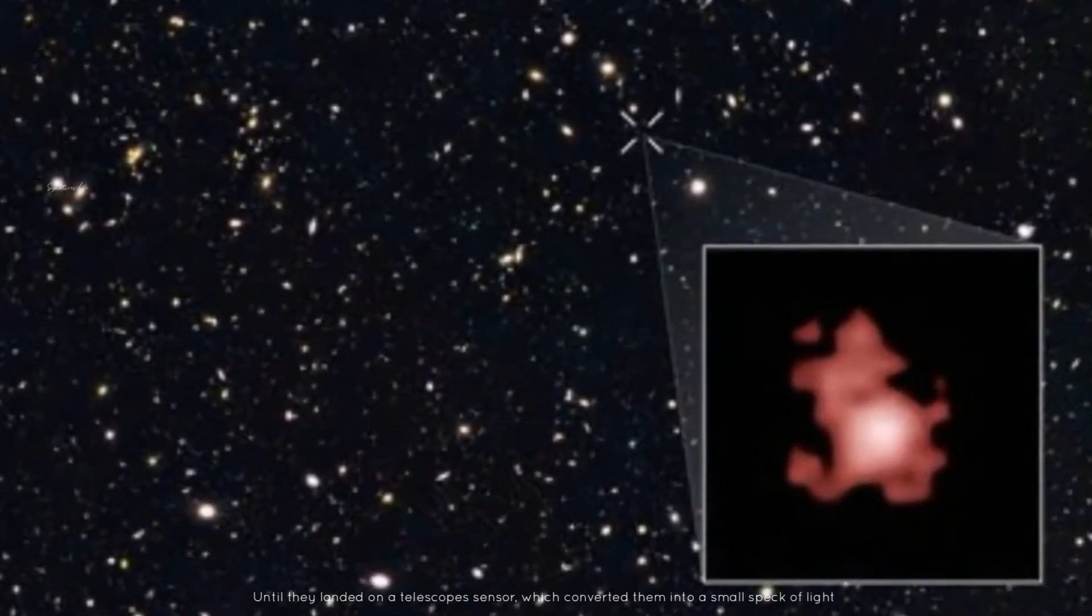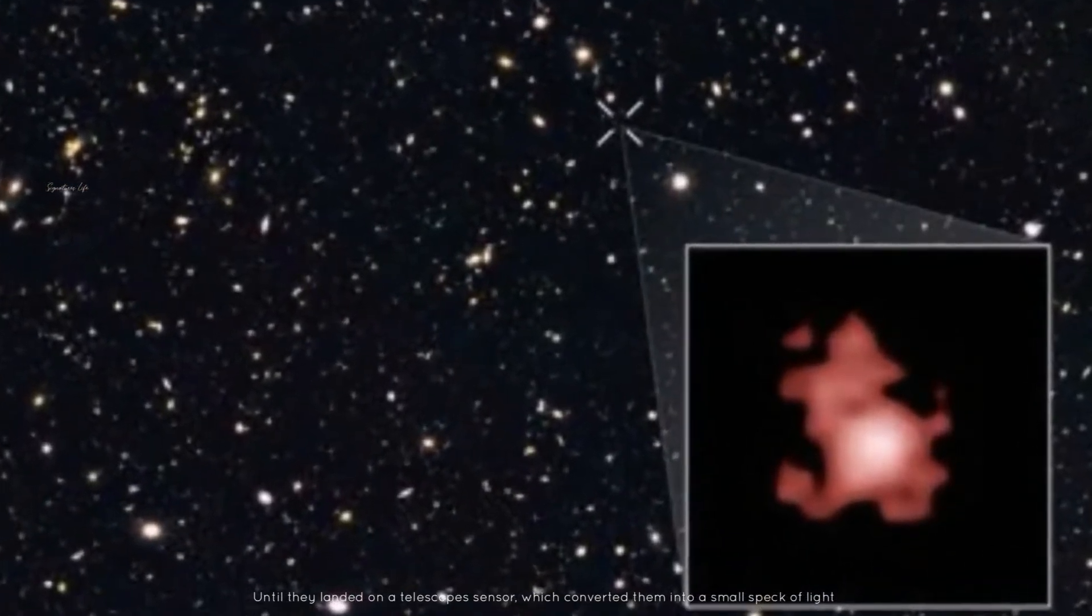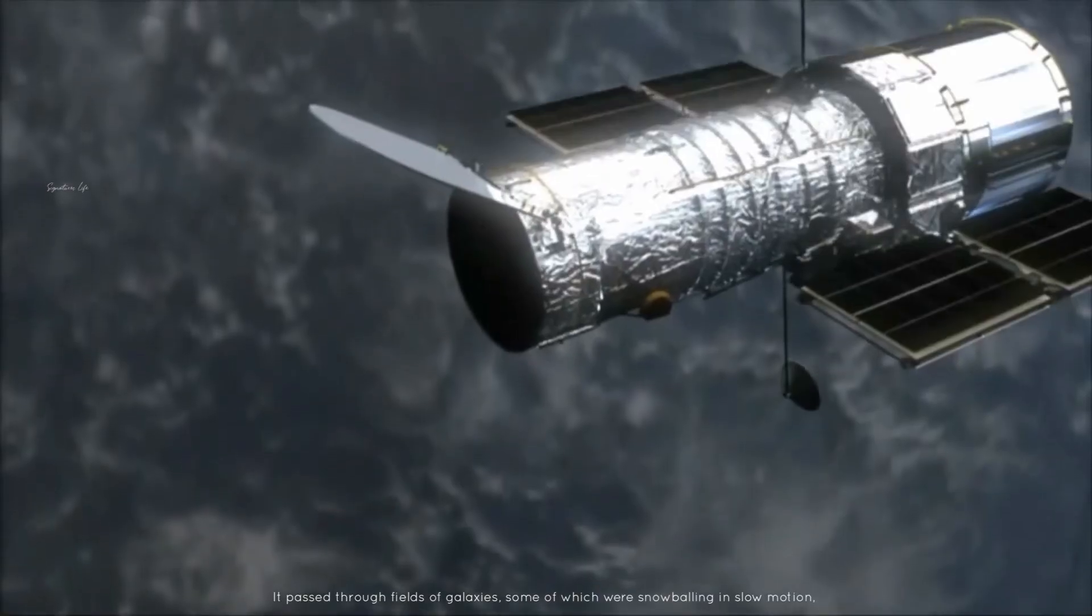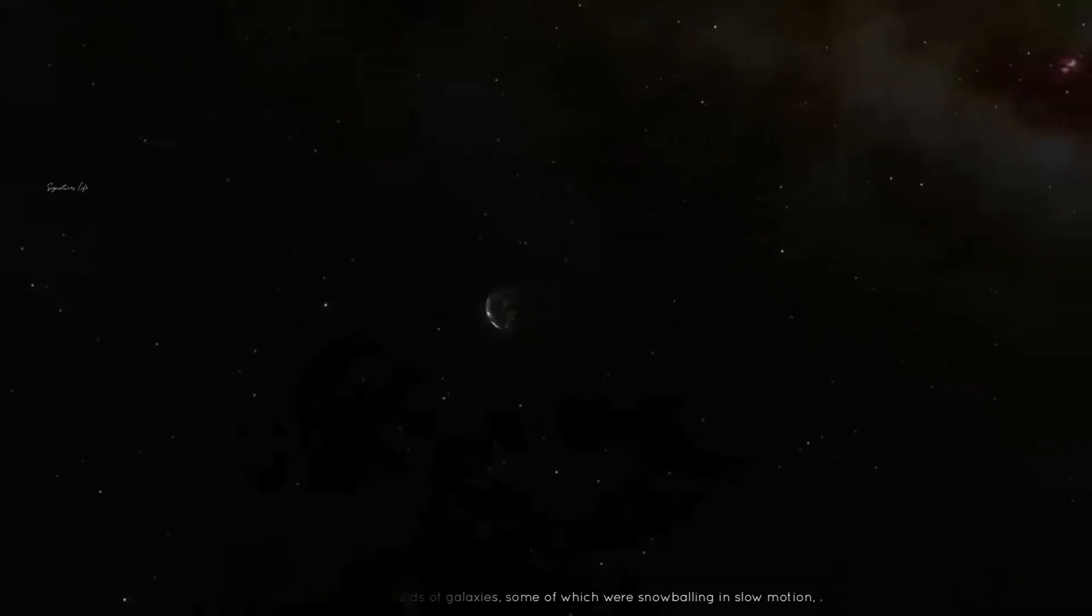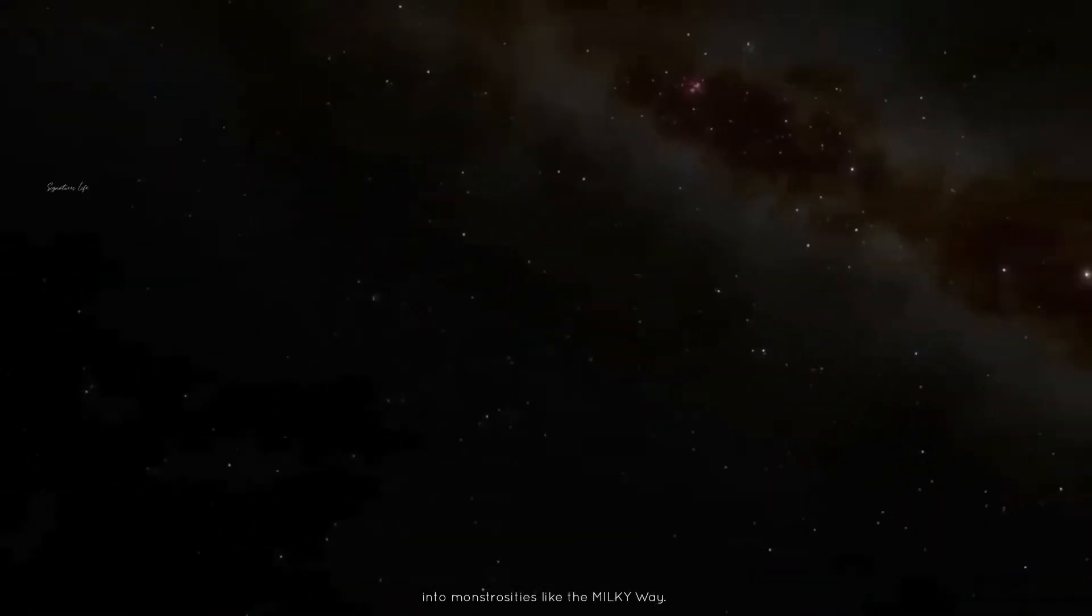As this light made its way to us from across the cosmos, it passed through fields of galaxies, some of which were snowballing in slow motion into massive structures like the Milky Way.